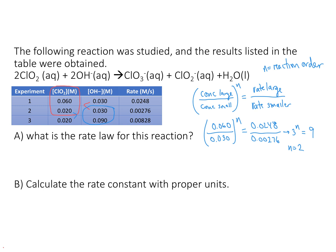Now for the hydroxide, we do the same calculation, except using experiments 2 and 3. So 0.09 divided by 0.03, raised to n, equals my larger rate 0.00828 divided by my smaller rate 0.00276. When I divide those, I get 3 to the n equals 3, so n equals 1. That's a first-order relationship.